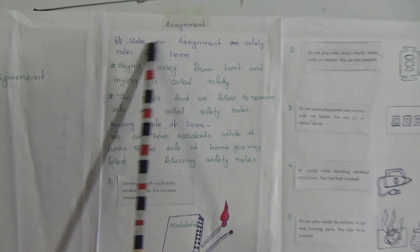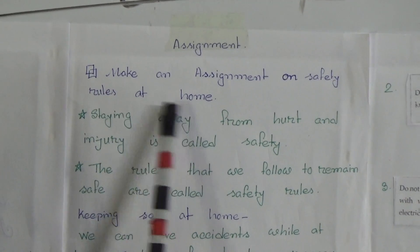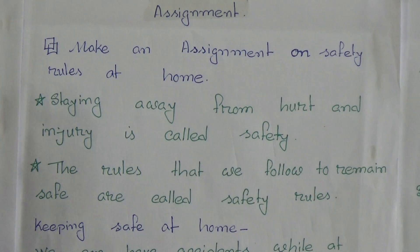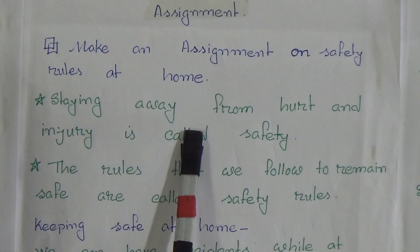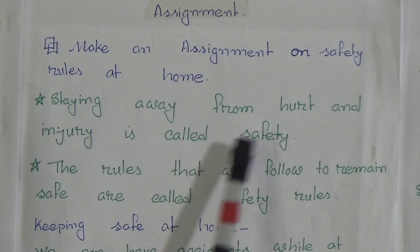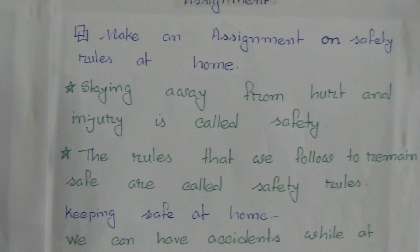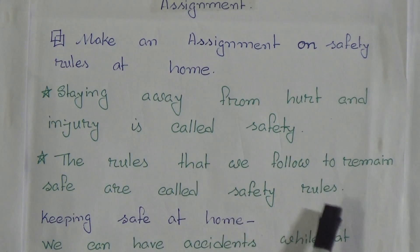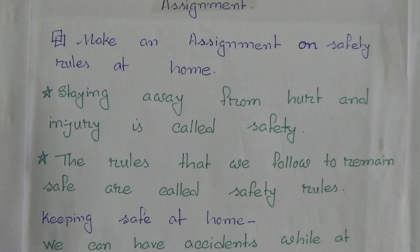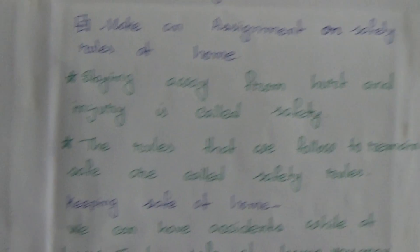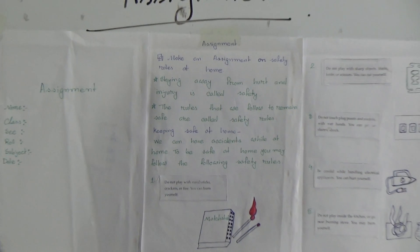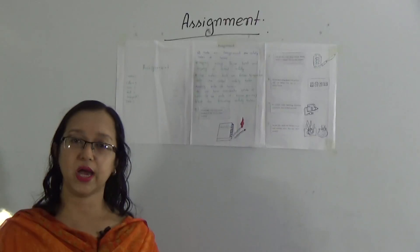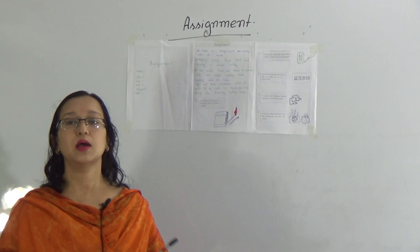Our assignment topic is: make an assignment on safety rules at home. Staying away from hurt and injury is called safety. What is safety? Safety means staying away from hurt and injury. What are safety rules? Safety rules means the rules that we follow to remain safe are called safety rules. We will now read the safety rules which we must follow at our home to keep away from accidents.